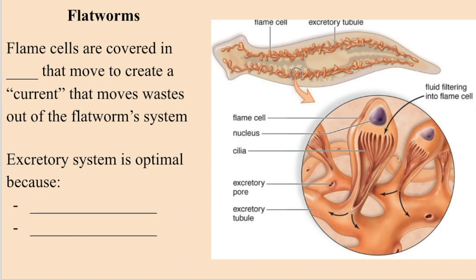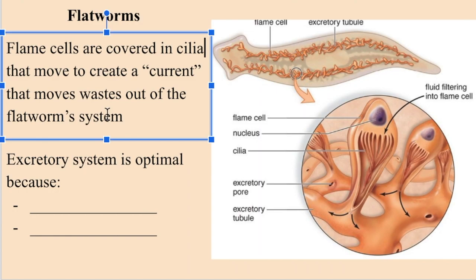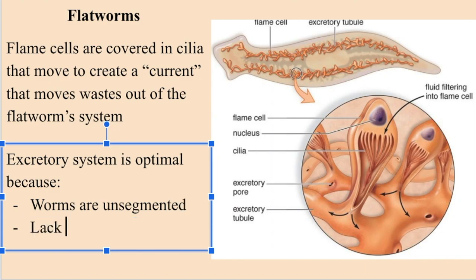Now let's go on to our first actual organism, the flatworm. Flatworms have an excretory system consisting of two or more long tubules that run the length of their body. These tubes open up through either pores on the surface of the flatworm or through more defined holes. Interestingly, their excretory tubules end in bulb-shaped cells called flame cells, which are covered in cilia projections that move to create a sort of current that moves waste out of the flatworm system. The flatworm's excretory system is essentially perfectly tailored to its body, as they are unsegmented and lack circulatory systems. Their flame cells and excretory tubules allow flatworms to pick up waste directly from their bodily tissues and quickly dispose of it.